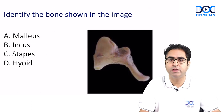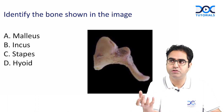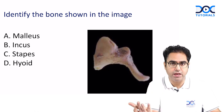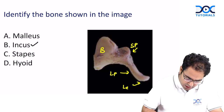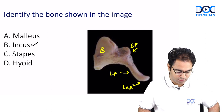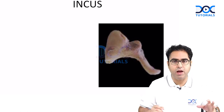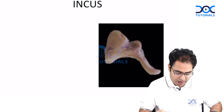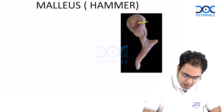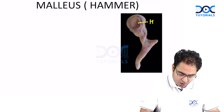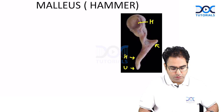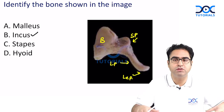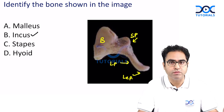One more question: identify the bone shown in the image. Based on what people have shared on social media, it is the incus. The incus has a body, a short process, a long process, and a lenticular process. It cannot be the malleus because the incus looks like an anvil, while the malleus has a distinct head, a lateral process, a handle, and an umbo. The answer of this question is incus, as supported by the images shared by people on social media.